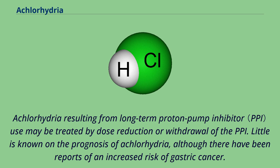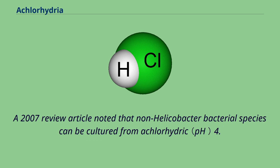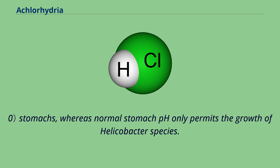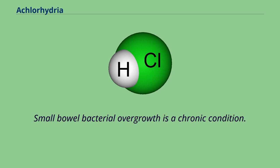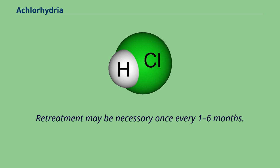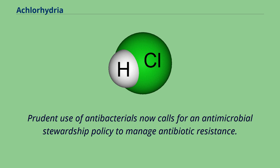Little is known about the prognosis of achlorhydria, although there have been reports of an increased risk of gastric cancer. A 2007 review article noted that non-Helicobacter bacterial species can be cultured from achlorhydric stomachs, whereas normal stomach pH only permits the growth of Helicobacter species. Bacterial overgrowth may cause false positive H. pylori test results due to the change in pH from urease activity. Small bowel bacterial overgrowth is a chronic condition, and retreatment may be necessary once every 1–6 months. Prudent use of antibacterials now calls for an antimicrobial stewardship policy to manage antibiotic resistance.